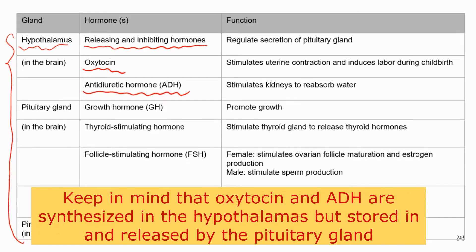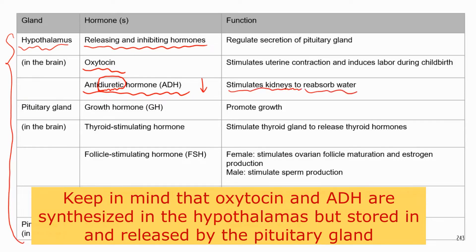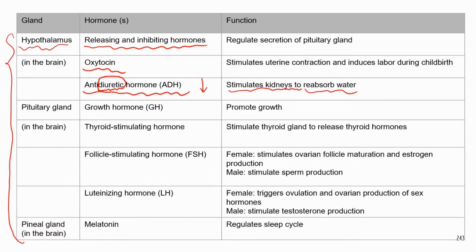The next hormone is antidiuretic hormone, or ADH for short. A diuretic increases urine production, so antidiuretic means this hormone decreases urine production. ADH stimulates the kidneys to reabsorb water, so less water ends up in the urine, which decreases the volume of urine produced.